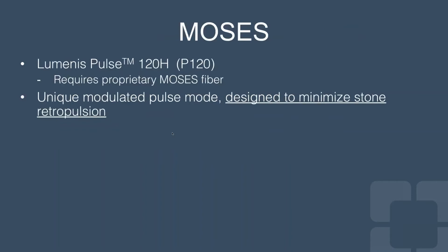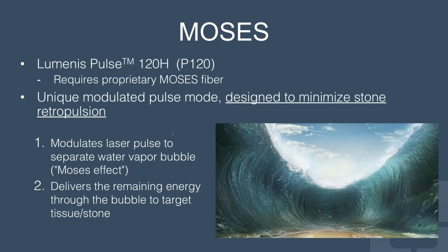Many companies have developed lasers that can modulate pulse width to generate longer pulse widths. Luminous in particular came up with a proprietary technology known as MOSES, featuring a unique modulated pulse mode designed to minimize stone retropulsion. The mechanism generates a dual pulse: the first pulse is designed to separate the water vapor bubble — the MOSES effect — and the second pulse delivers the remaining energy through the bubble to target the tissue and stone, minimizing retropulsion while maximizing impact.